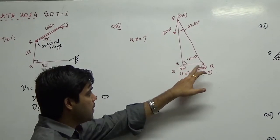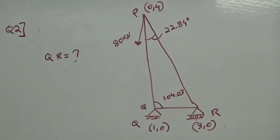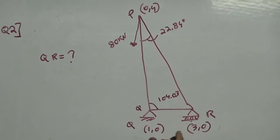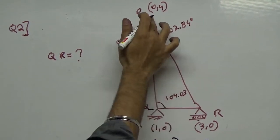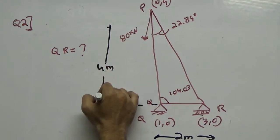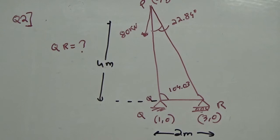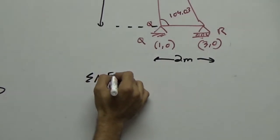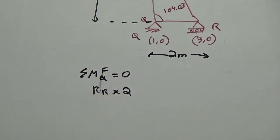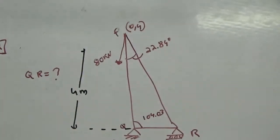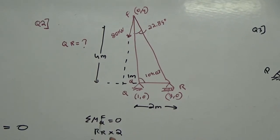The second problem, in this, the force in the member QR is asked. Now, it's a simple problem. The only difference is that they have given you in terms of coordinates. So, if this is 1,0, this is 3,0, what is this distance? 2 meter. Right? The rest of the things becomes very simple. And if you take the summation of moment of all the forces, all the forces about Q as 0, you have RR into 2.